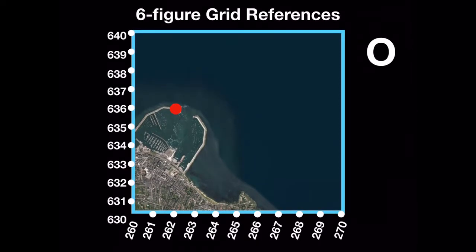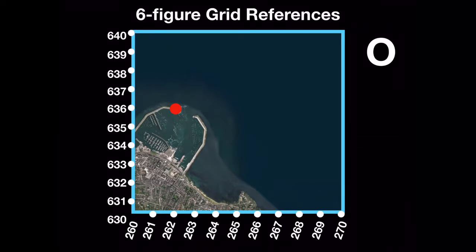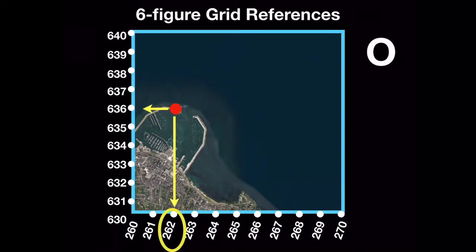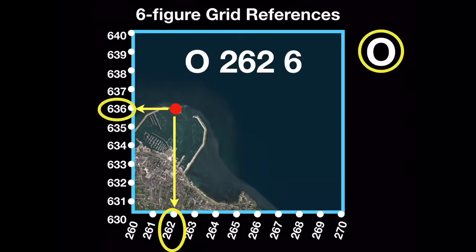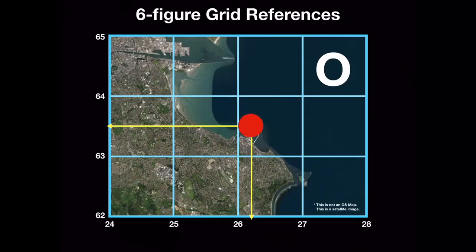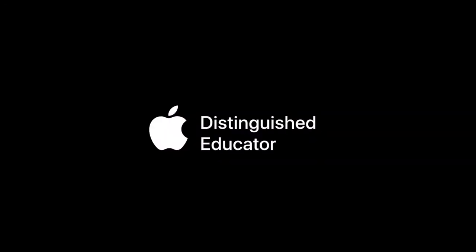The easting, 26, becomes 260 and each smaller part is then named 261, 262, 263 and so on. The northing, 63, becomes 630 and the subsequent parts are similarly named — for example, 631, 632 and so forth. This means that the six-figure grid reference for the lighthouse is O 262 636.